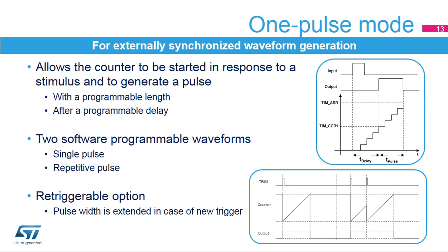One pulse mode is used to generate a pulse of a programmable length in response to an external event. The pulse can start as soon as the input trigger arrives or after a programmable delay. The compare one register, or CCR1 value, defines the pulse start time, while the auto-reload register, or ARR value, defines the end of pulse.